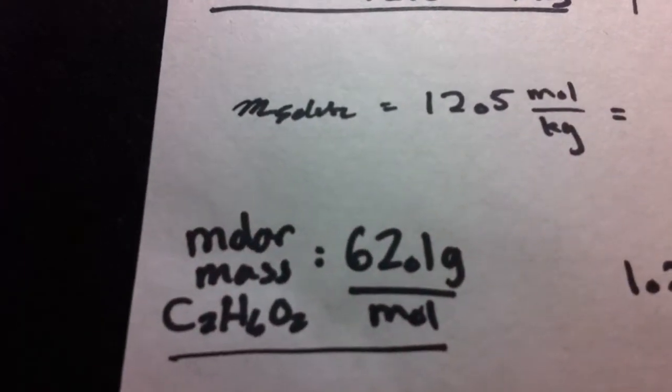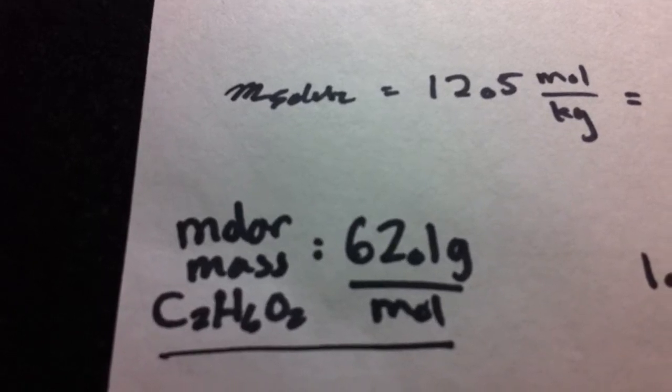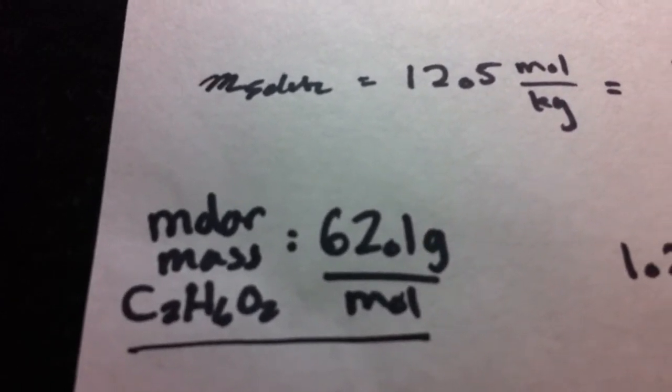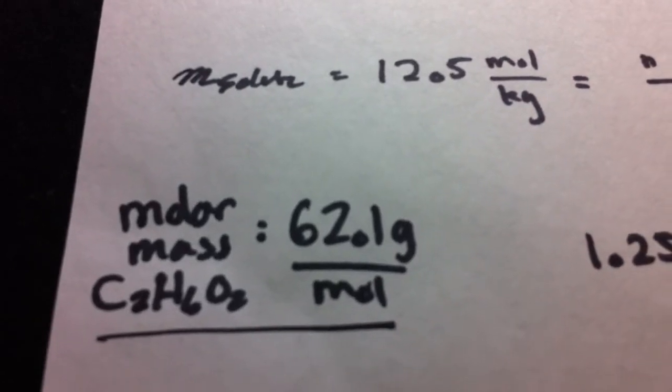We were also given the chemical formula of C2H6O2. Now if we want to find the molar mass, we just add all that up, put it into grams over mole, and we have 62.1.